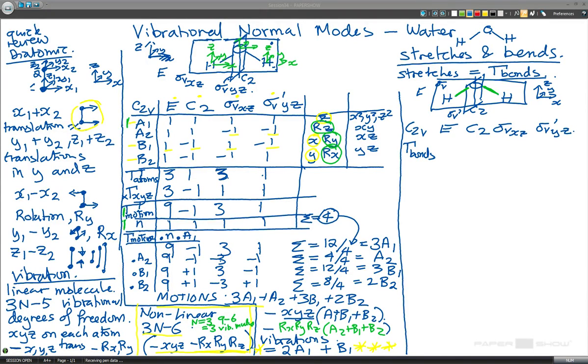So now what I'm going to do is just go right along and do it. So for E we have, we do nothing, so both bonds stay in the same place. We put a two here. For C2, the two bonds will swap place, so that gives us a zero. For sigma X, Z, sigma V, X, Z, that's in the plane of the screen or the plane of the page, as I'm writing on a piece of paper here.